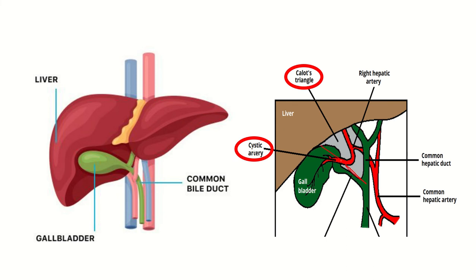The Calot's triangle is bounded inferiorly and laterally by the cystic duct, medially by the common hepatic duct, and superiorly by the liver. Within the Calot's triangle, there is an artery — the cystic artery — which is branched from the right hepatic artery. Here we can see the right hepatic artery and the left hepatic artery, with the cystic artery branching from the right hepatic artery and located within the Calot's triangle.